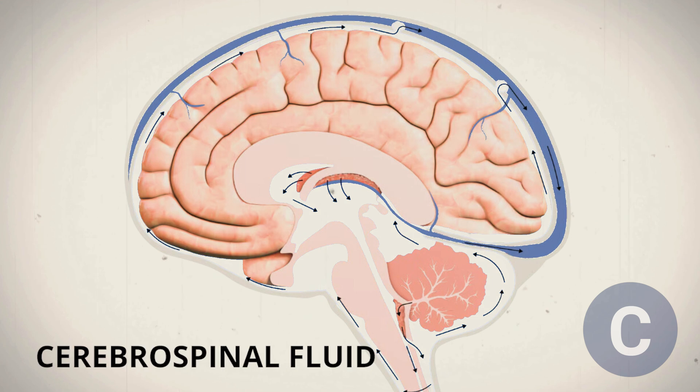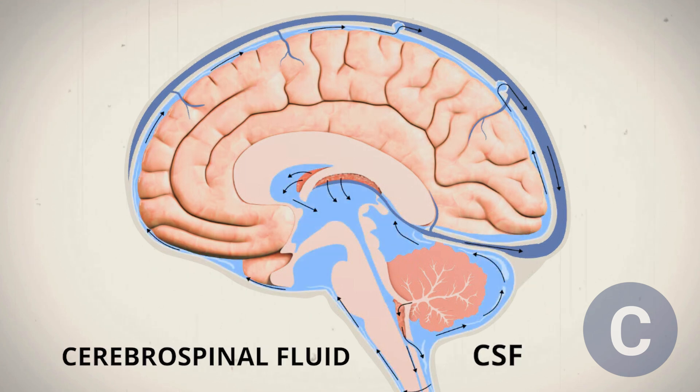According to this hypothesis, cerebrospinal fluid, CSF, plays a crucial role in this cleaning process, helping to remove interstitial solutes, such as amyloid beta.